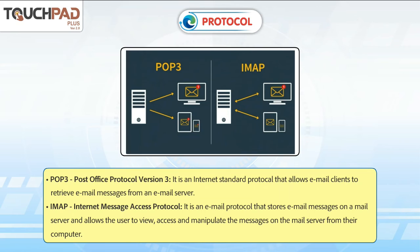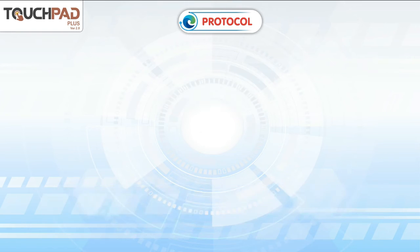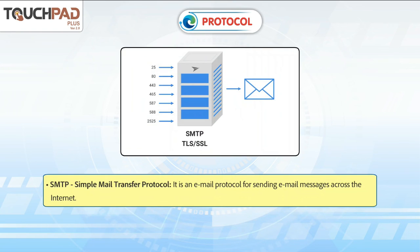IMAP – Internet Message Access Protocol – is an email protocol that stores email messages on a mail server and allows the user to view, access, and manipulate the messages on the mail server from their computer. SMTP – Simple Mail Transfer Protocol – is an email protocol for sending email messages across the internet.